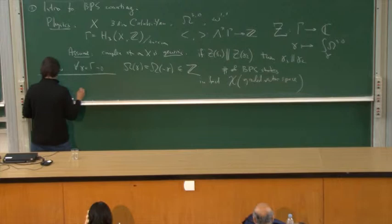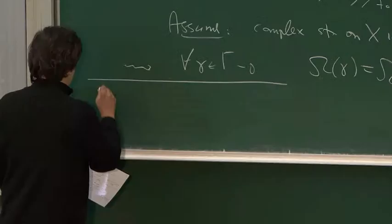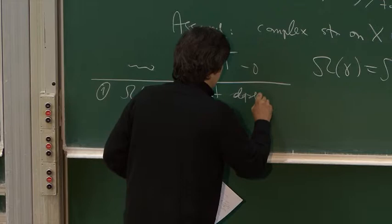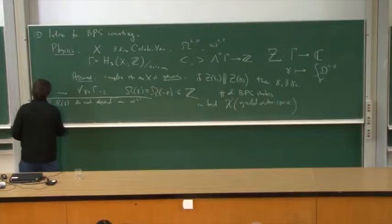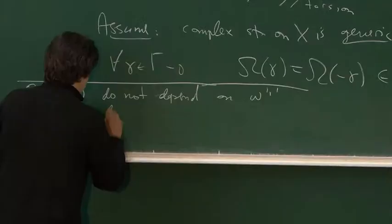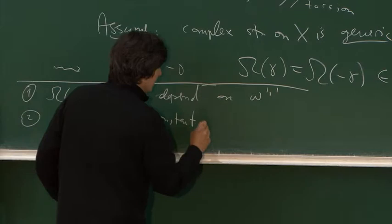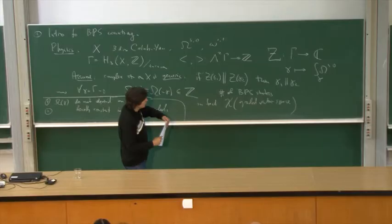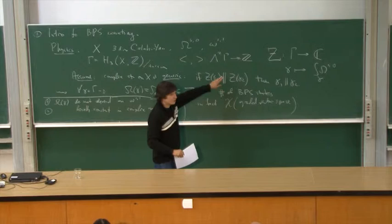These numbers satisfy nice properties. The numbers do not depend on Kähler class, and they almost do not depend on complex structure. They're locally constant in complex moduli space and they jump according to some rule when several charges become aligned.